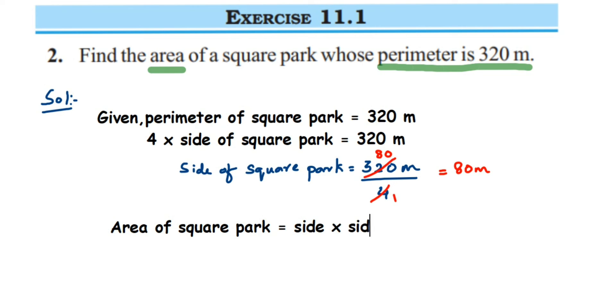Area of square park will be side times side, or side squared. The side we know is 80 meters, so 80 meters multiplied by 80 meters.